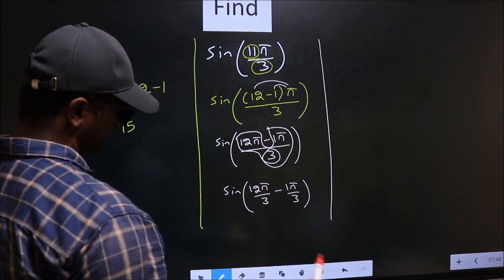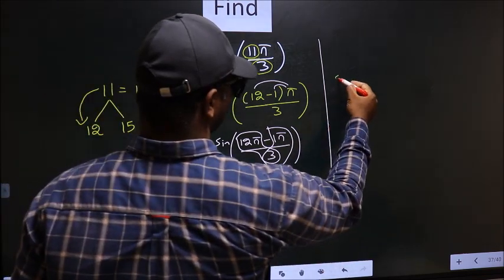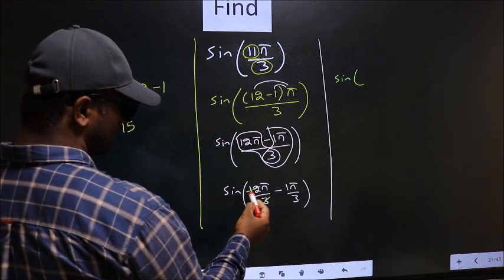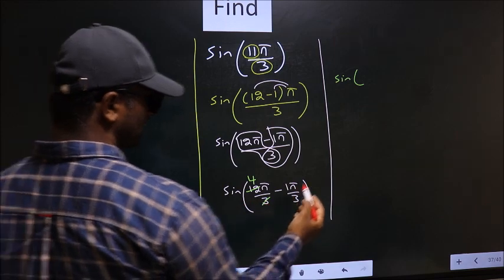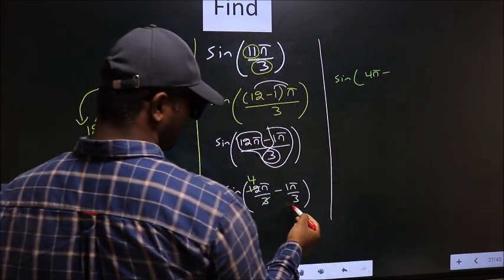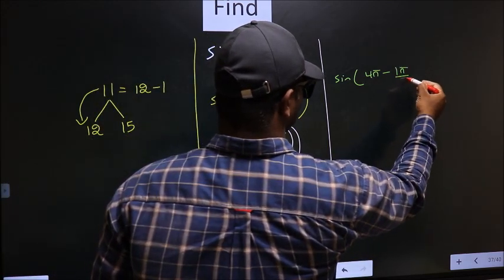Okay, next. Sin of 12π by 3 is, you cancel 3 into 1, 3 into 4. You get 4π minus this will remain as it is, 1π by 3.